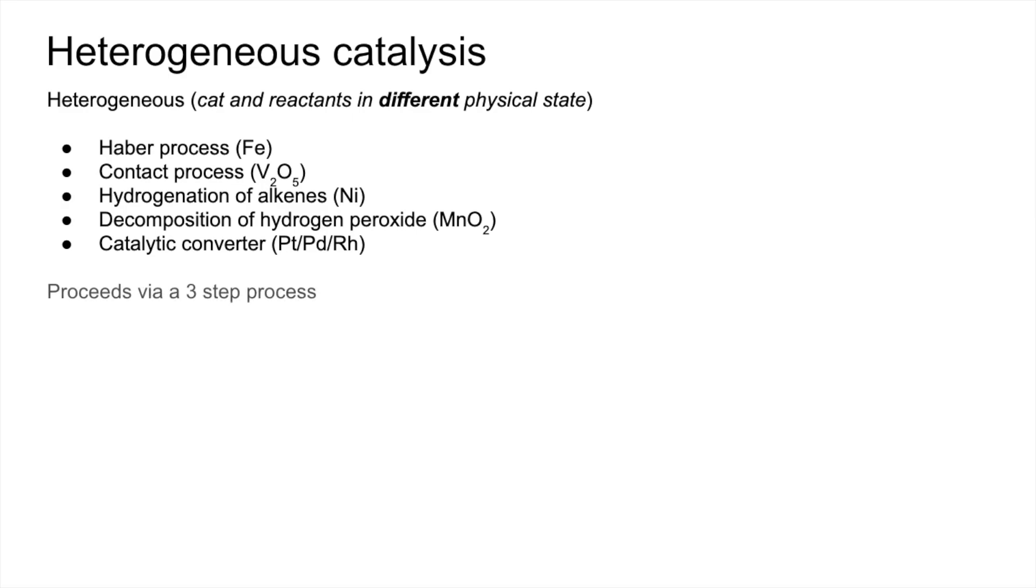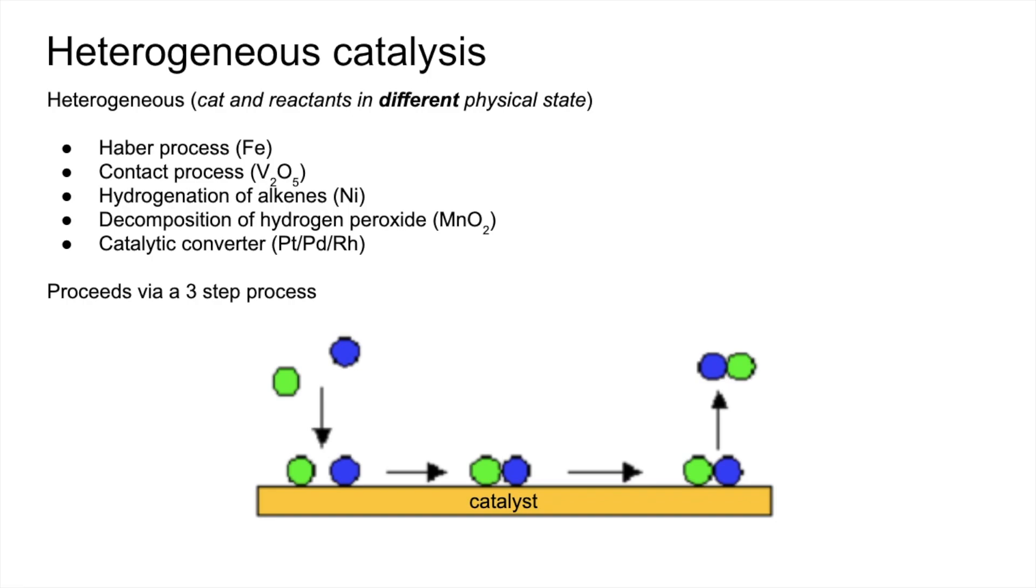So we need to know how heterogeneous catalysts work. That's via a three-step process. So I'll just run through those three steps. That picture there represents the catalyst and the separate green and blue are the reactants and the combined green-blue is the product.